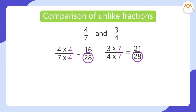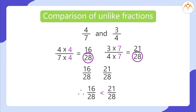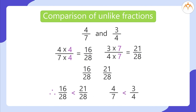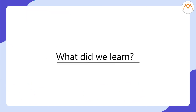Now we can easily compare these two like fractions with the same denominator: 16 by 28 and 21 by 28. Therefore, 16 by 28 is less than 21 by 28. Therefore, 3 by 4 is greater than 4 by 7.